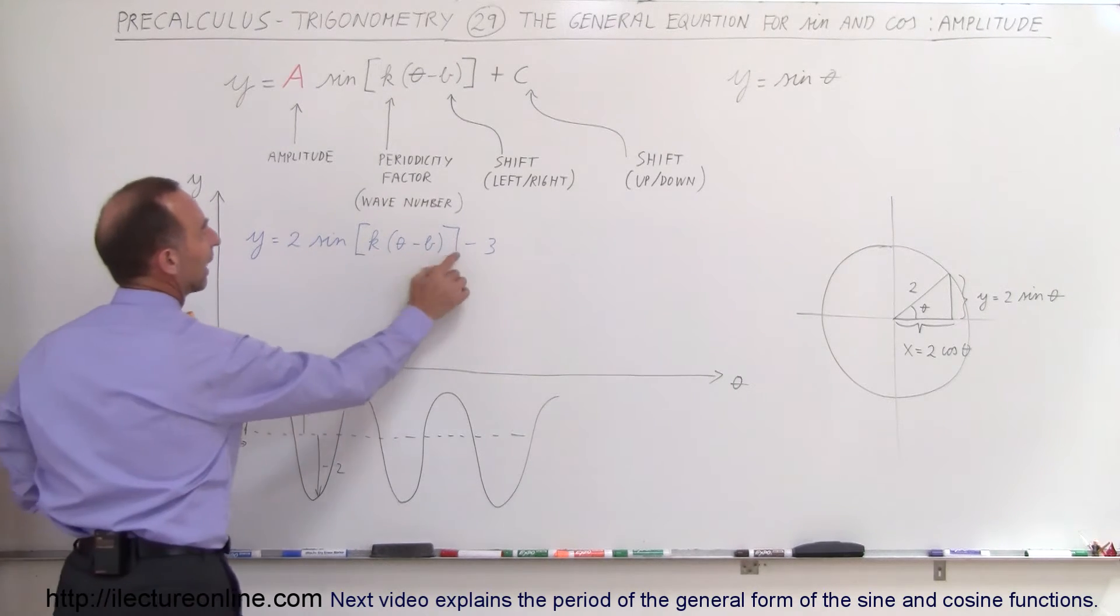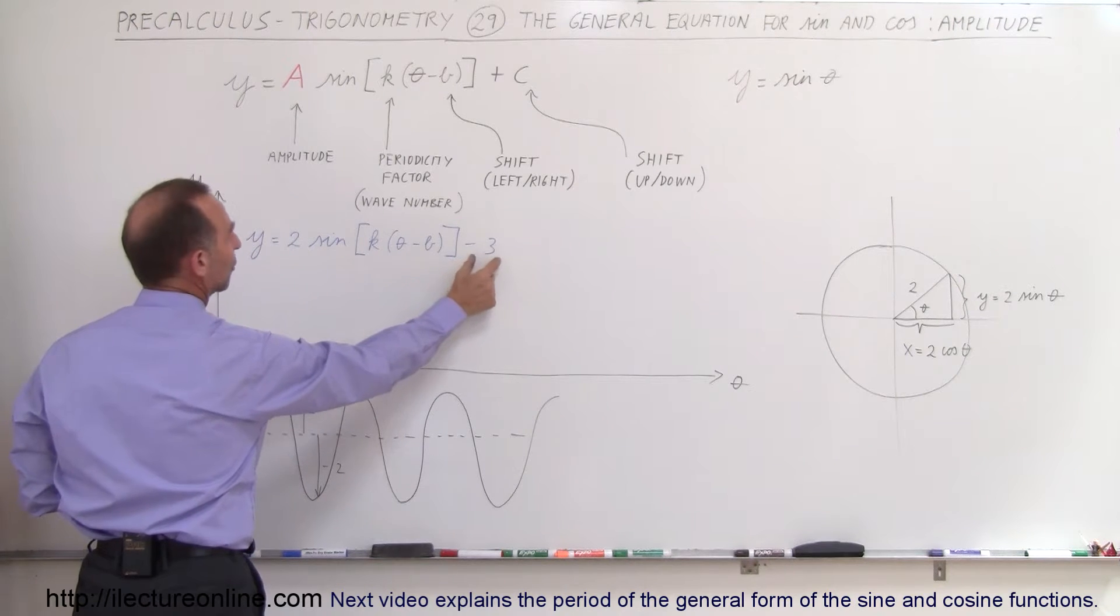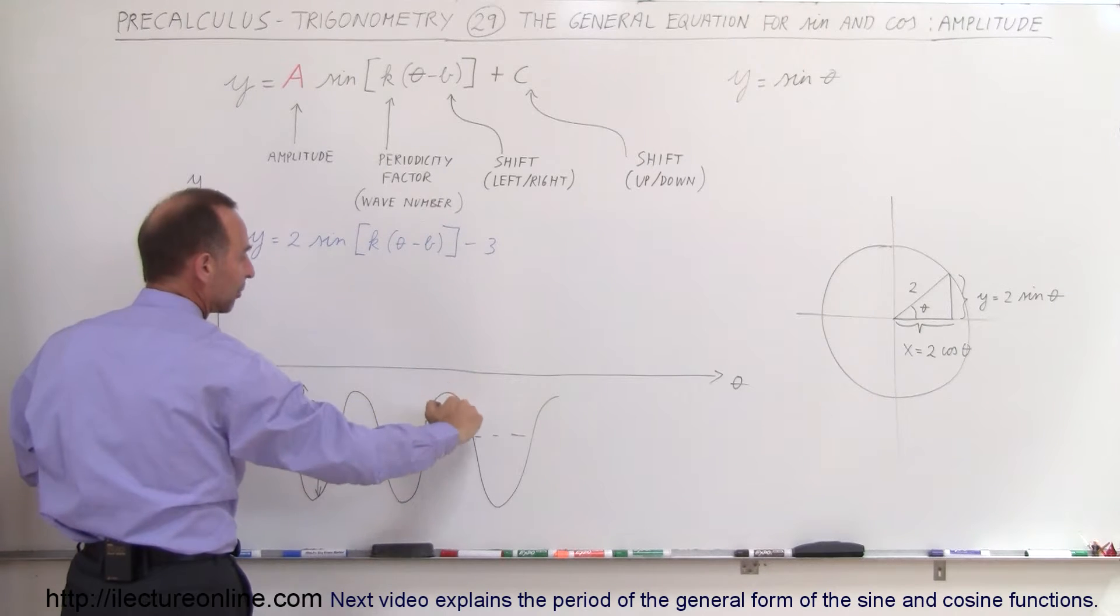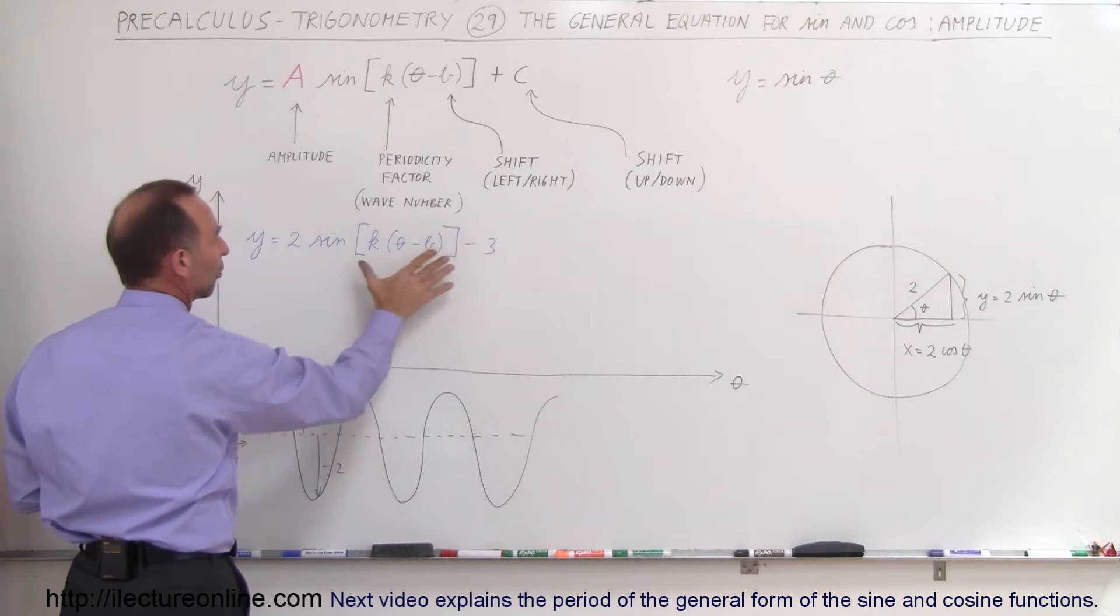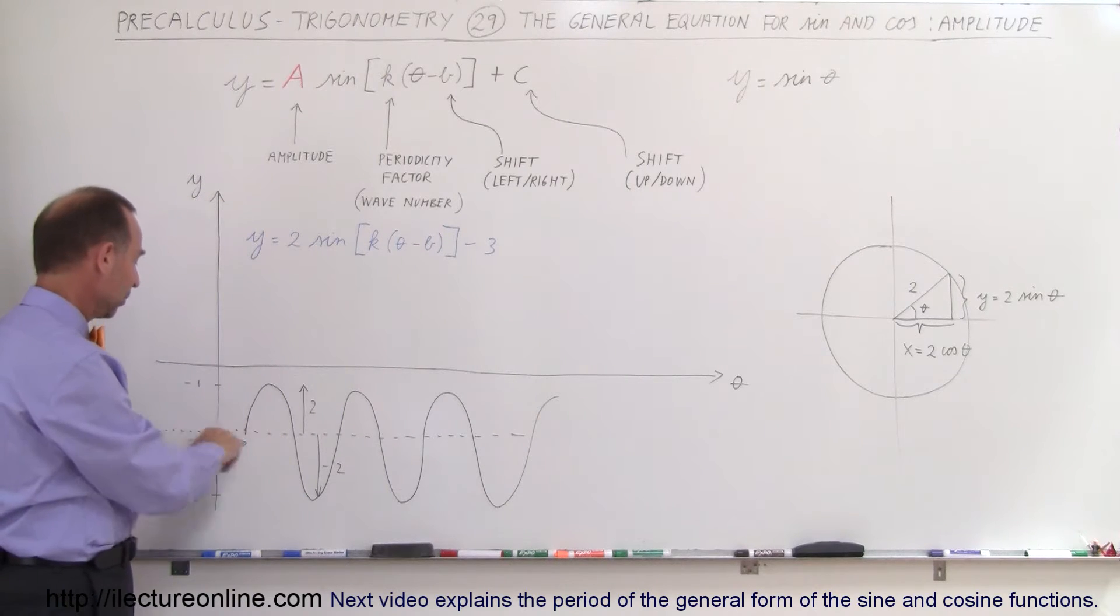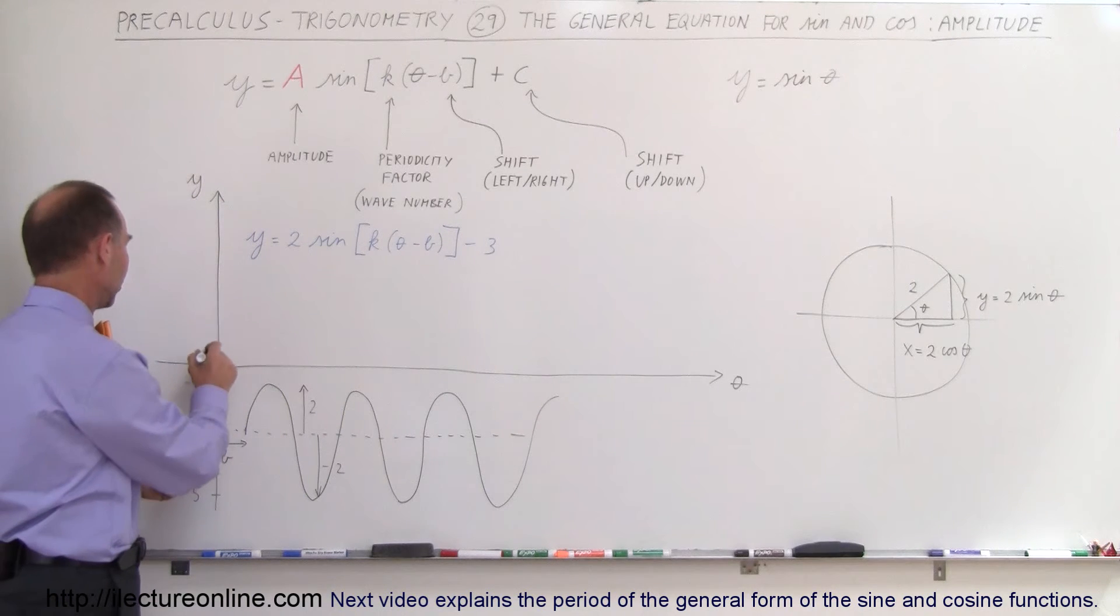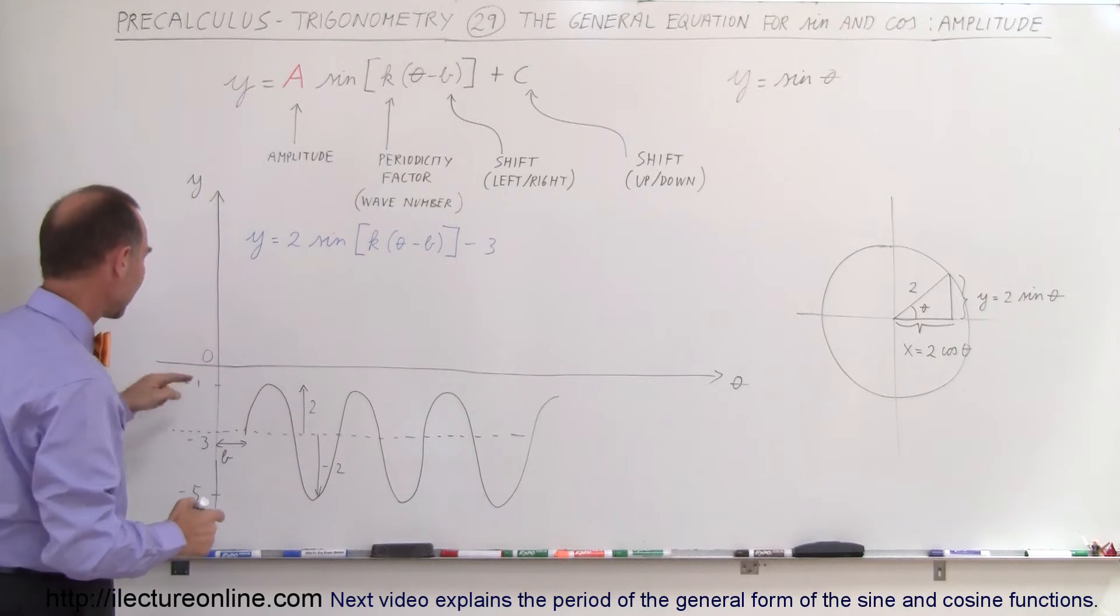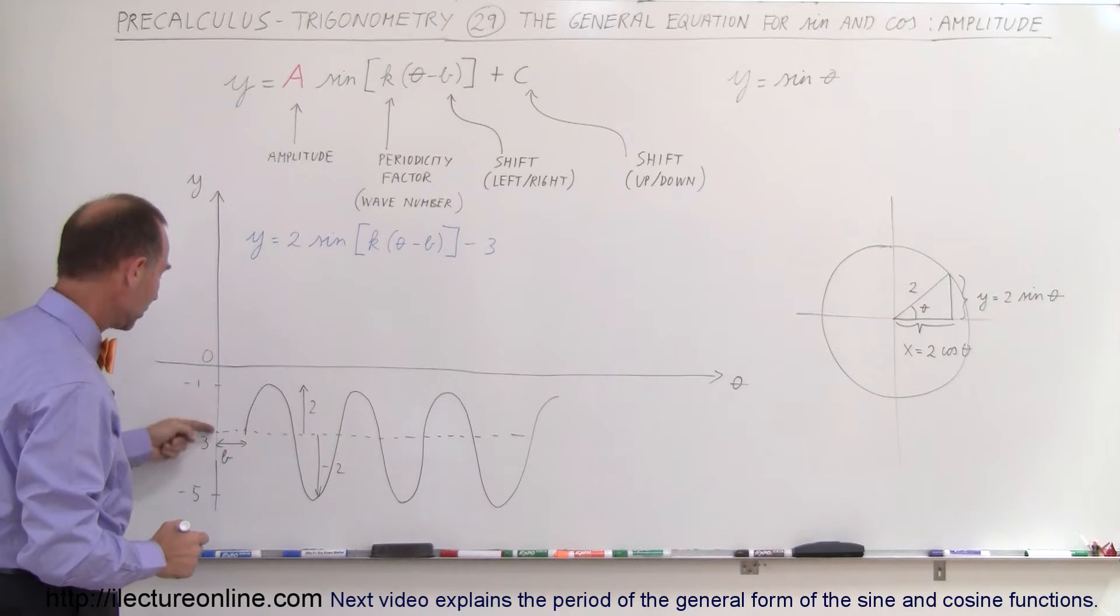So this is the angle and we're subtracting 3 from the overall sine function. The minus 3 simply means it's going to drop the function by 3 units, so when everything else is 0, y would be minus 3, which is right here below the axis. So this is the 0 point, this is the coordinate point between the y-axis and the theta axis where the point is 0, so we're 3 units below that.